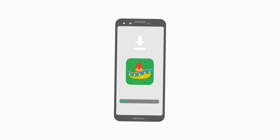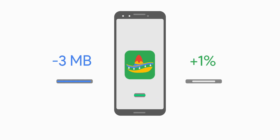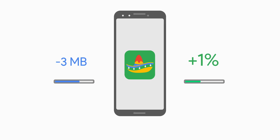This results in higher install conversion rates and a better user experience. In fact, for every three megabytes removed in APK-sized apps, see on average a 1% increase in installs. Learn more at g.co/androidappbundle.